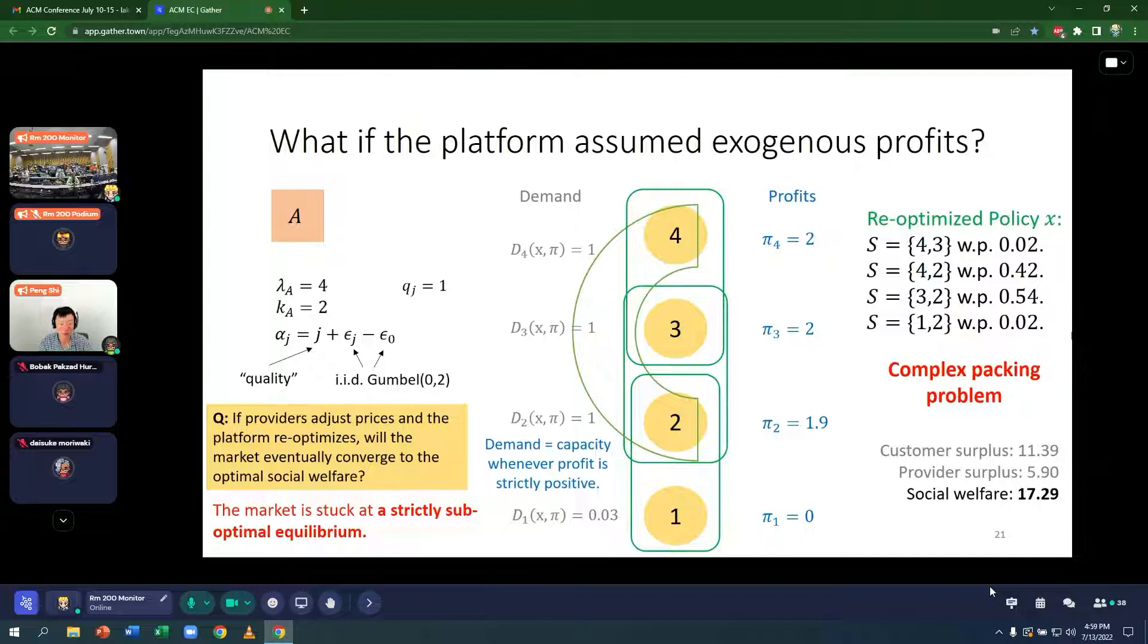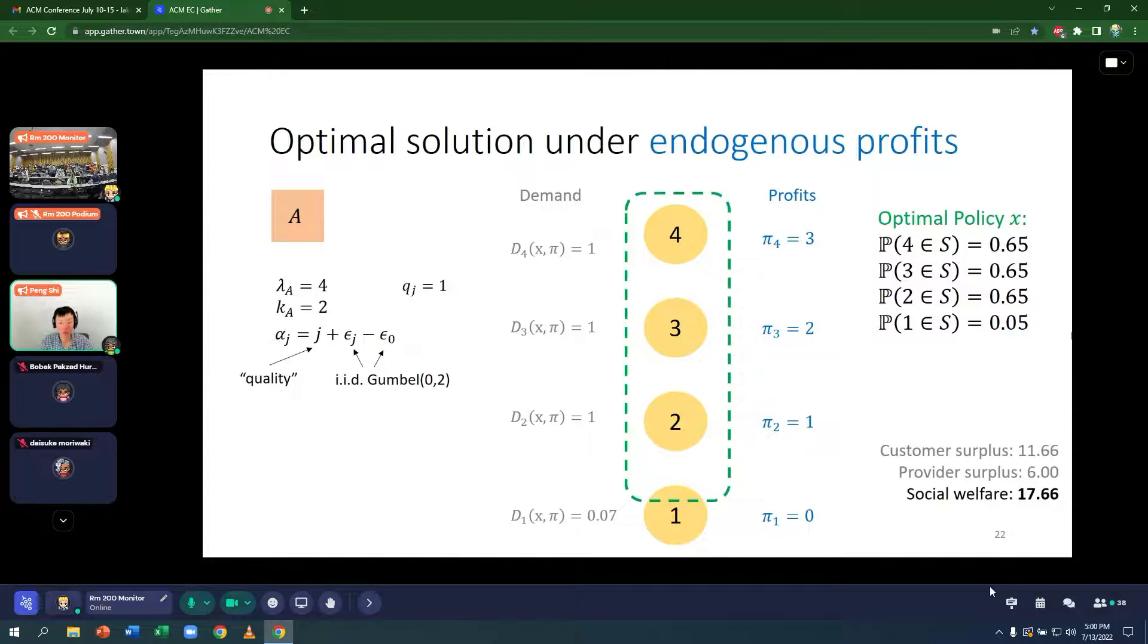So in other words, the market is stuck at this strictly suboptimal equilibrium. It's a self-fulfilling equilibrium. The platform believes profits are exogenous and implements this policy and the profits actually don't change and confirm the platform's false belief. In contrast, if we consider the optimal solution under endogenous profits, we get a simpler policy that's based on these impression probabilities and the social welfare is higher. So that summarizes the main results of the paper.